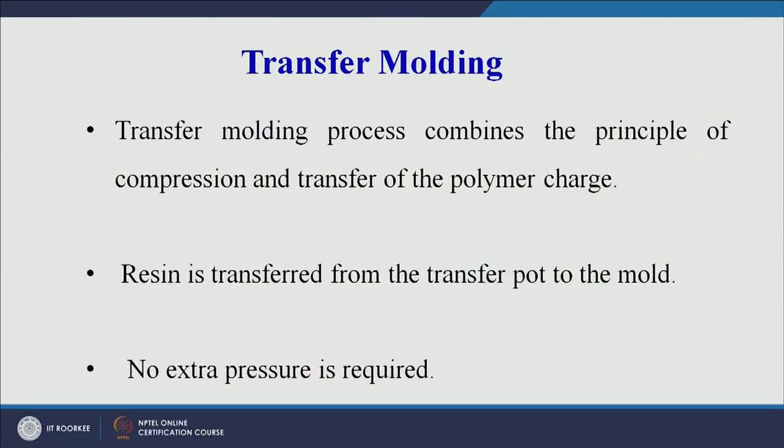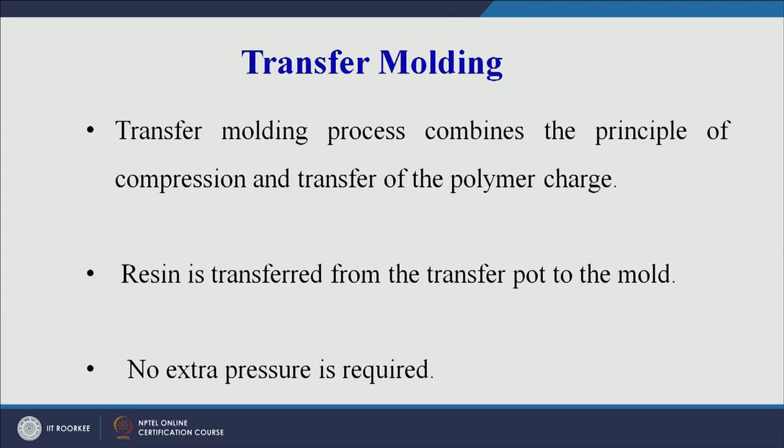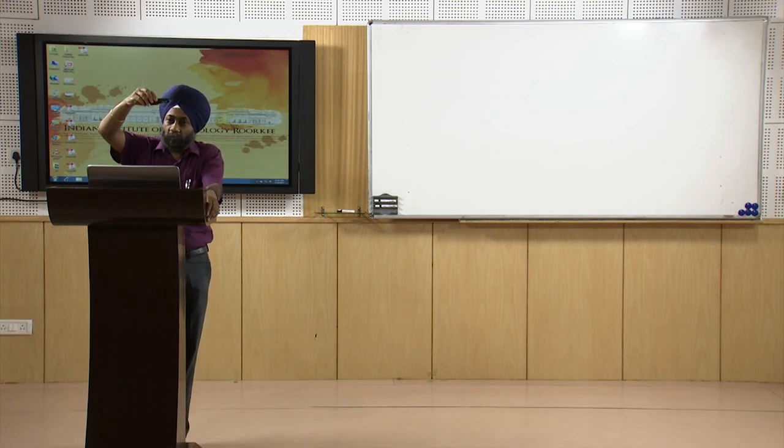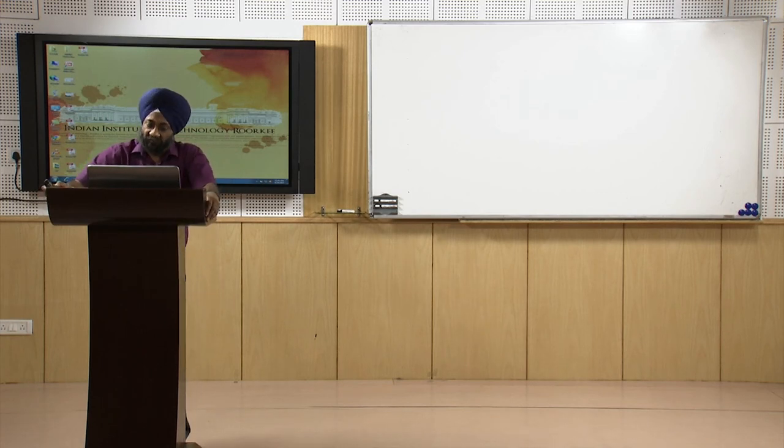The resin is transferred from the transfer pot to the mold through the sprue. No extra hydraulic or pneumatic pressure is applied — only the plunger, possibly using its own weight, forces the plastic through the sprue into the mold cavity. In injection molding, pressure is applied through a rotating screw, but here only the plunger force is used.